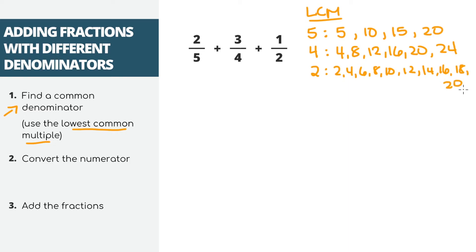Okay, now to find the least common multiple, you need to find the lowest number that shows up in all three of these lists, which is 20 for our problem. That means 20 is the least common multiple, and it's going to be the new denominator for our three fractions.